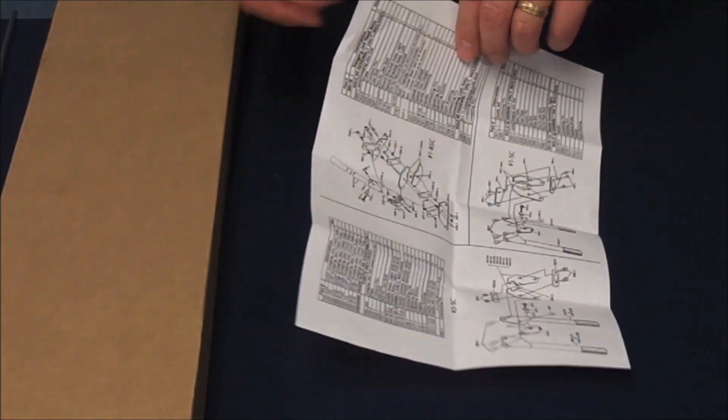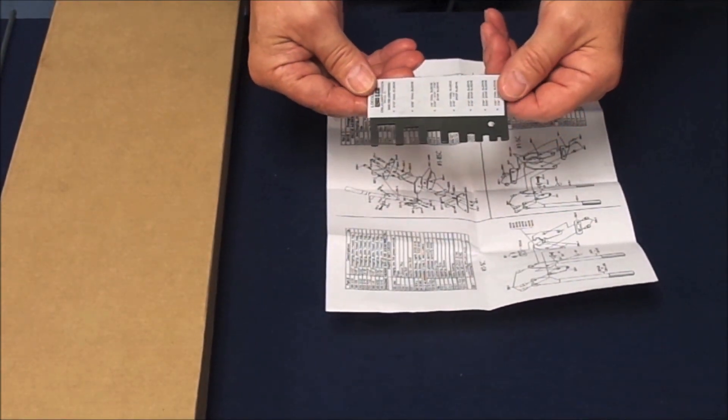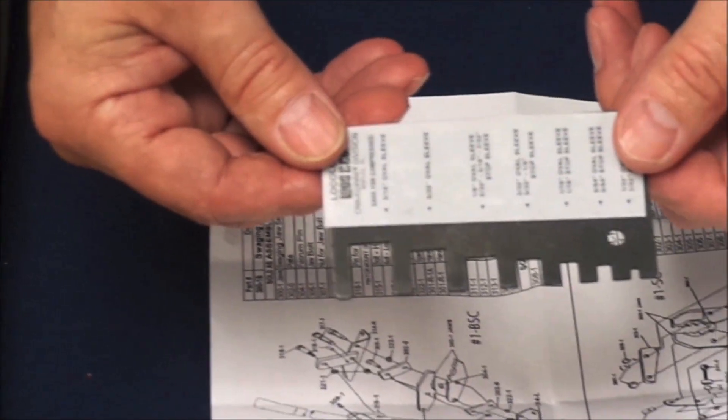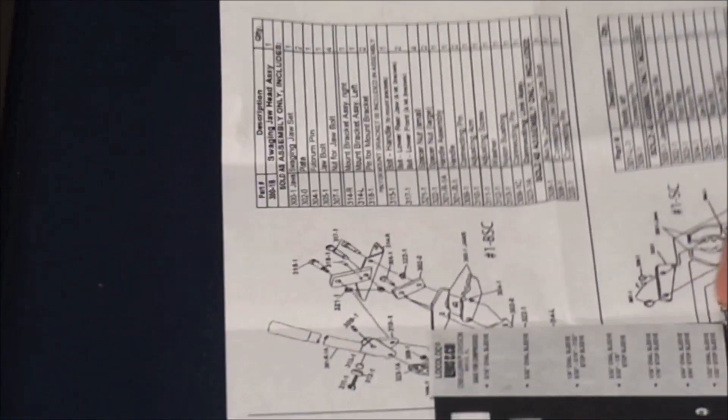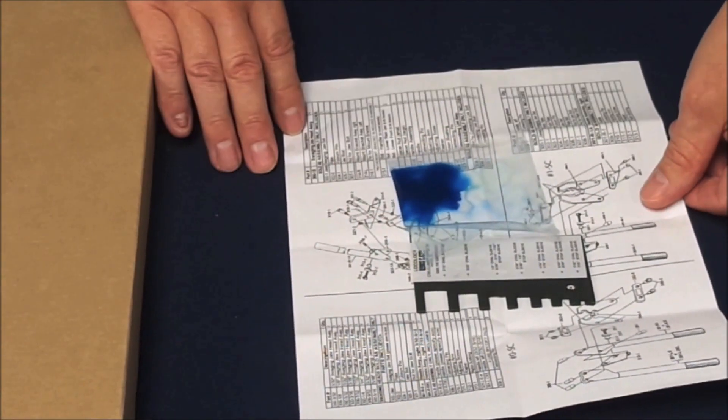This tool also comes with a go gauge for checking the finished after swage dimension of your fitting. A packet of grease is also included to keep your tool operating smoothly over the course of time.